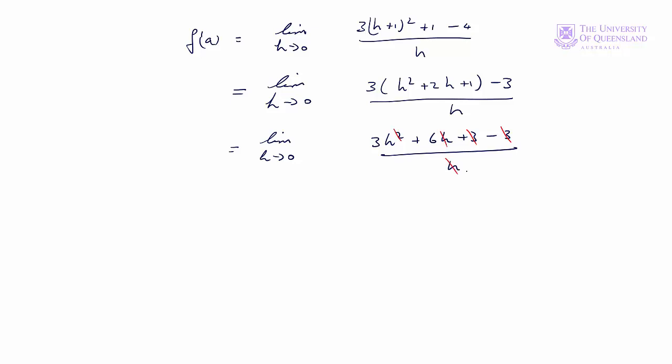So we have the limit as h approaches 0 of 3h plus 6. Well, the limit of 3h as h approaches 0 is 0, and the plus 6 doesn't have an h term, so what we have left is that's equal to 6.